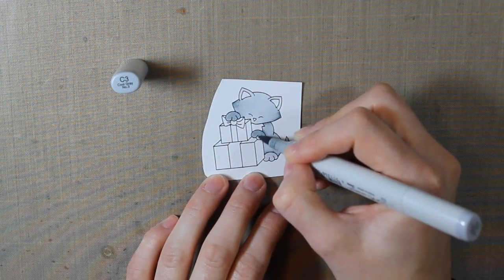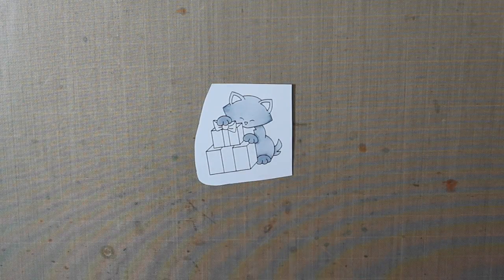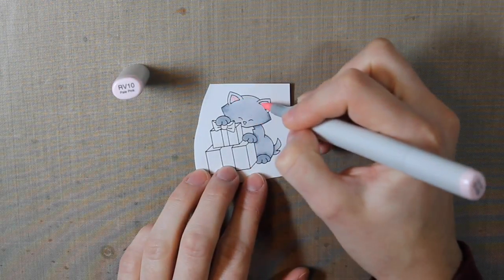So I wanted to make the cat's paws a little bit darker. So I'm coloring those in with the C3. And then for the inside of the cat's ears and the nose, I'm using the RV10.